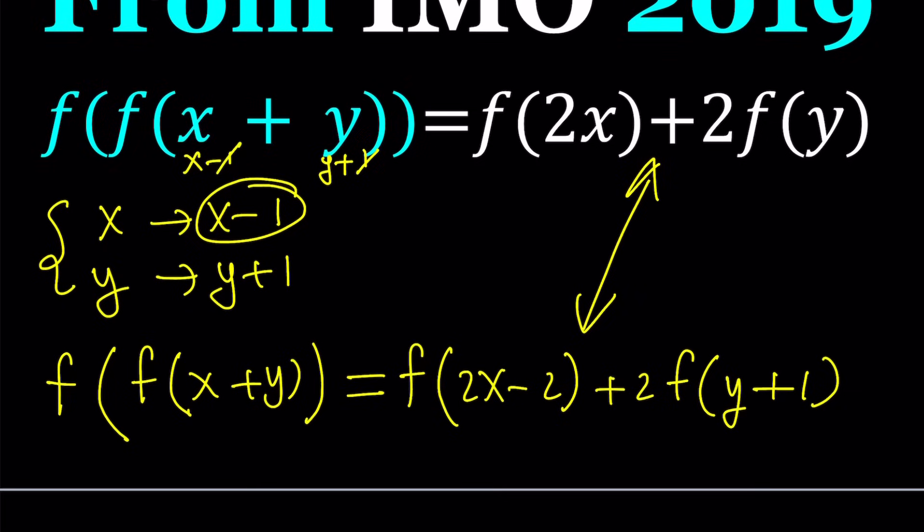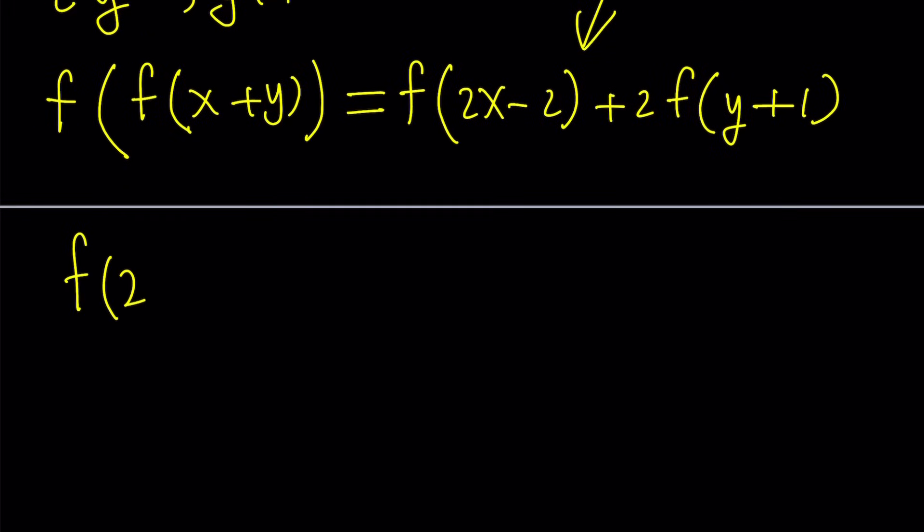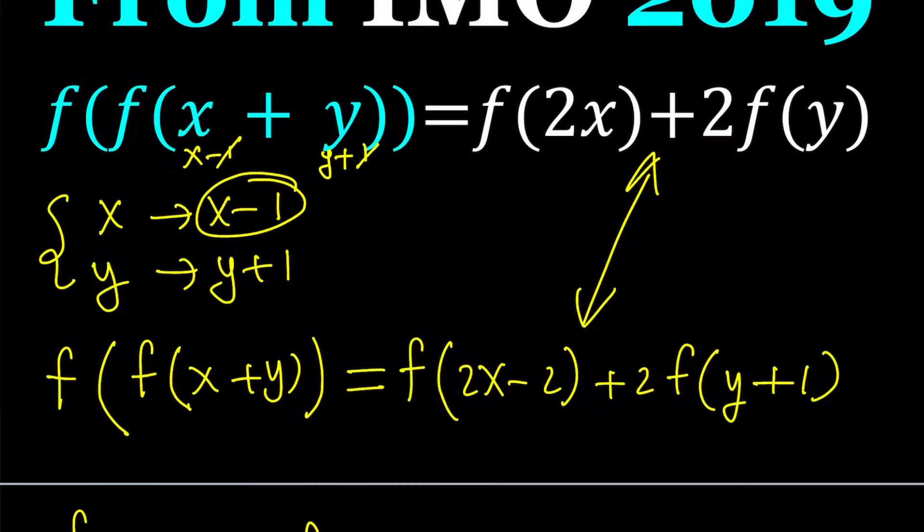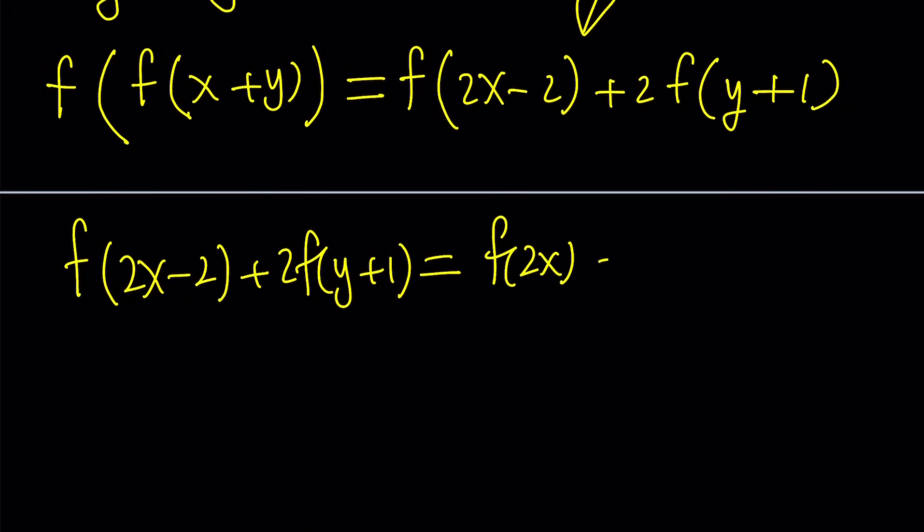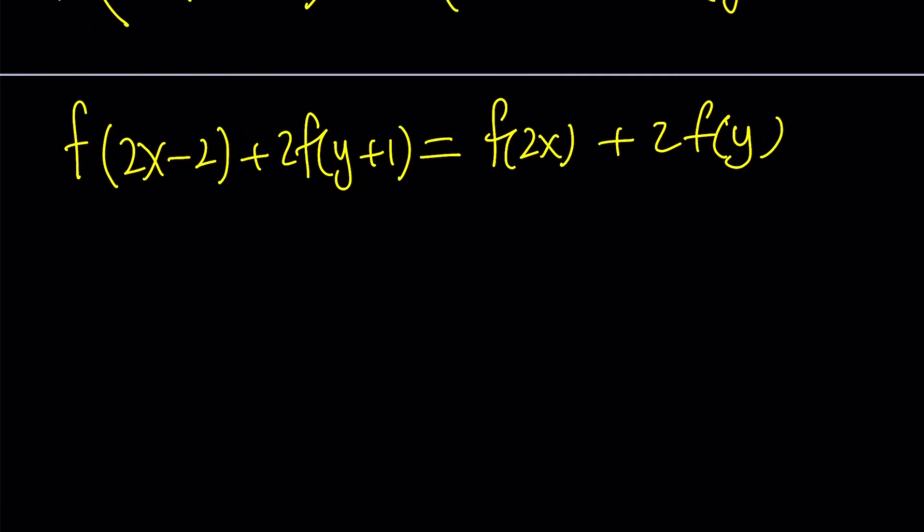In other words, f(2x-2) + 2f(y+1) = f(2x) + 2f(y). Now we're going to do a little manipulation on this equation, because as is, it's kind of complicated. We have two variables, x and y, and our goal is to get a special relationship between these sides. But for that, we need to replace one of the variables with a number.